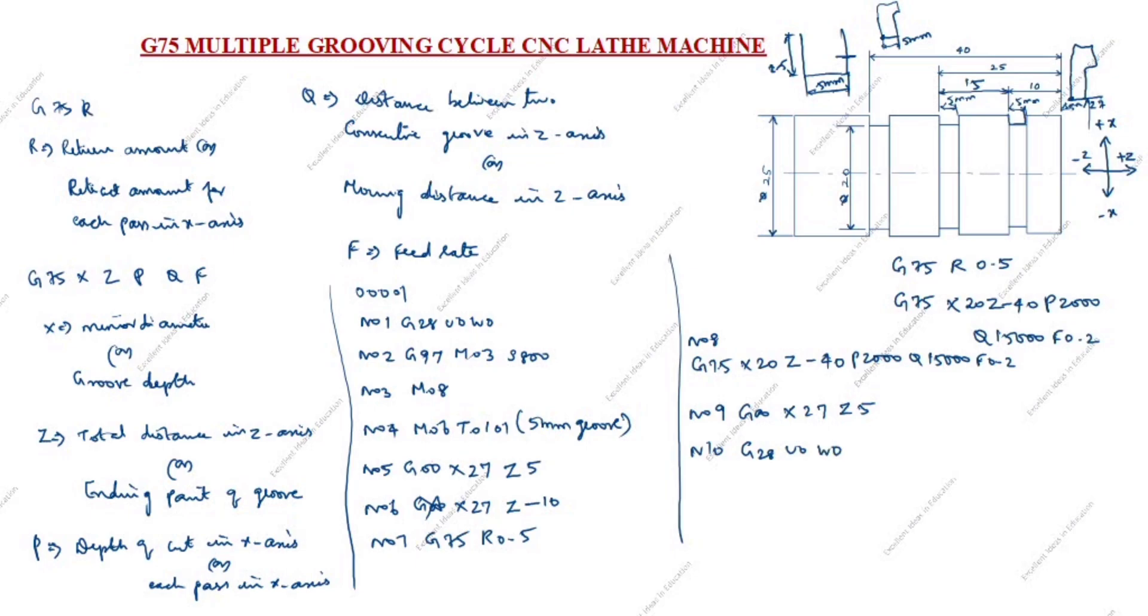N11 M09 coolant off. N12 M05 spindle off. N13 M30 end of the program and rewind.